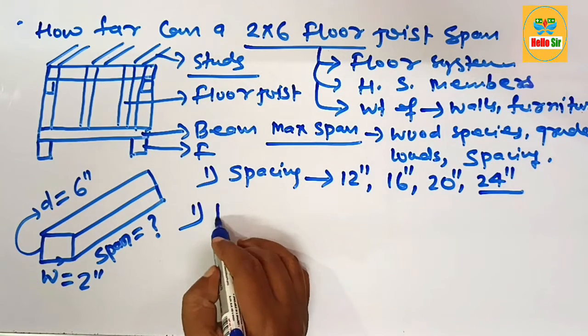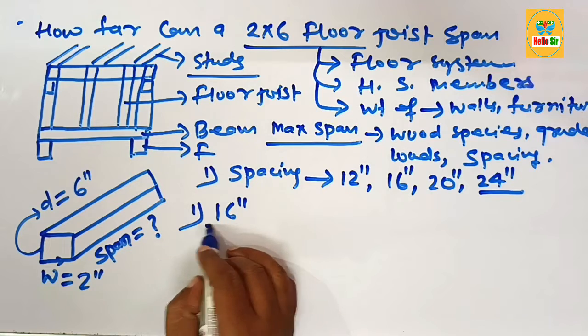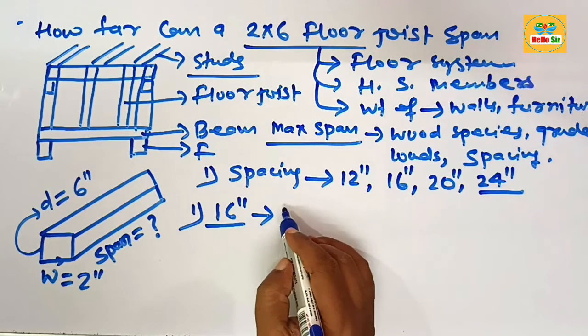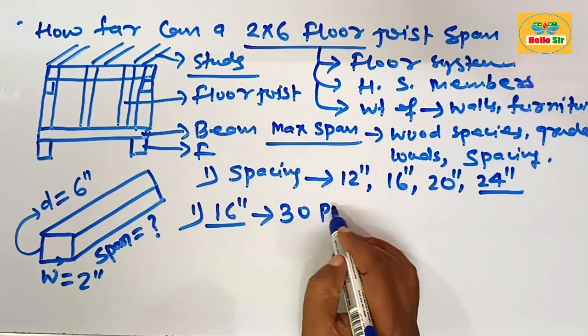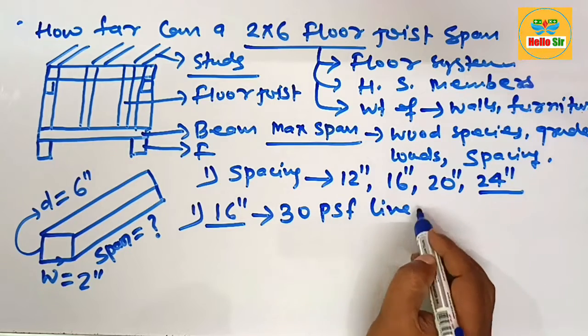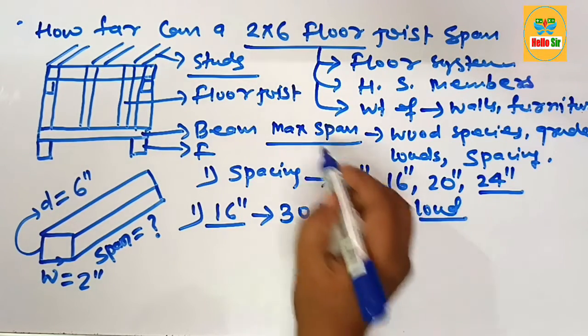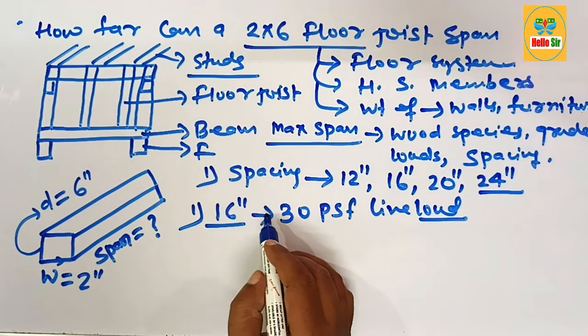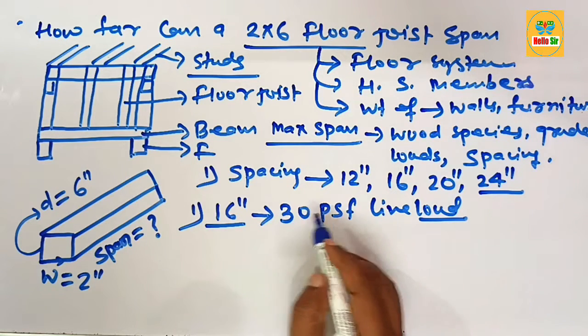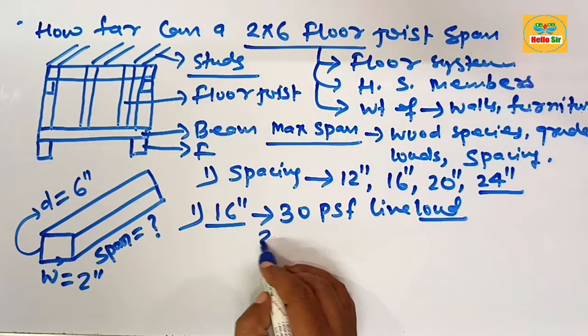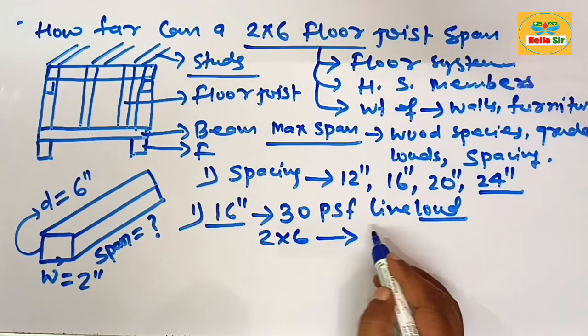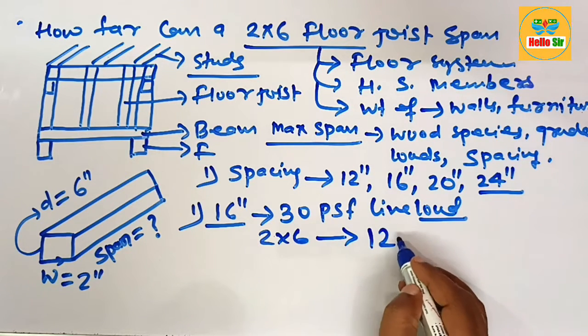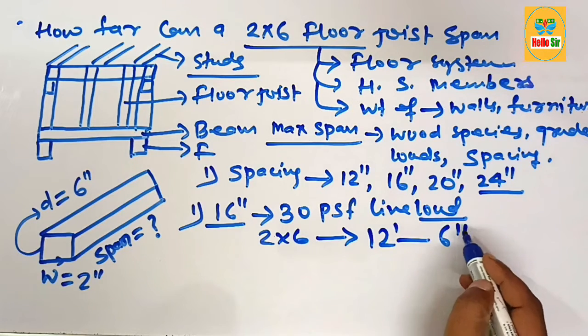As per load condition, suppose a common spacing is about 16 inches and the load condition is 30 psf live load. What will be the maximum span for a 2 by 6 floor joist? With common spacing 16 inches apart and 30 psf live load, a 2 by 6 floor joist can span a maximum distance of 12 foot 6 inches.